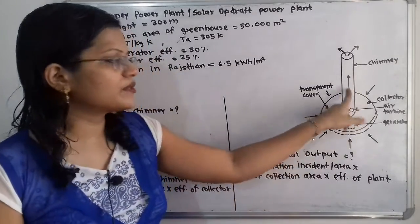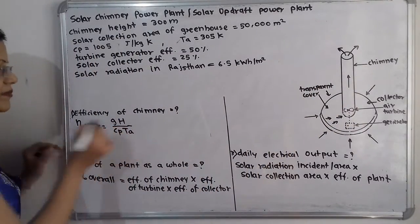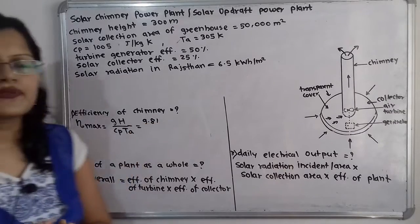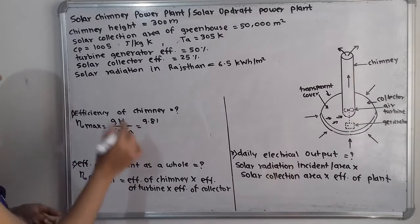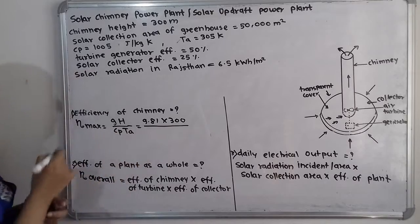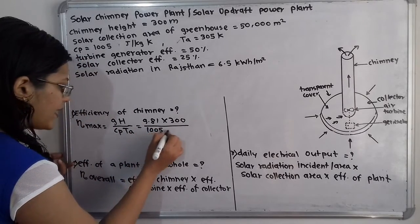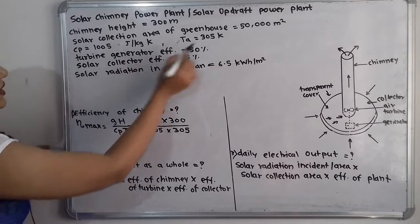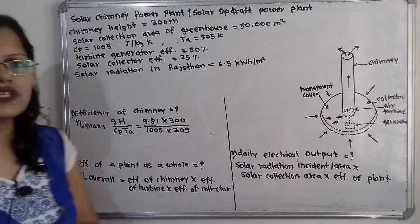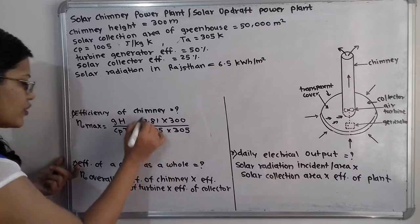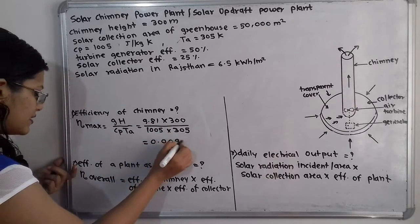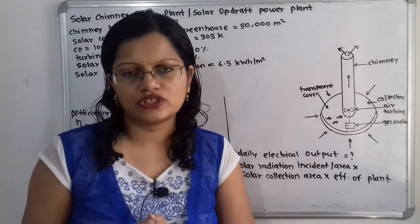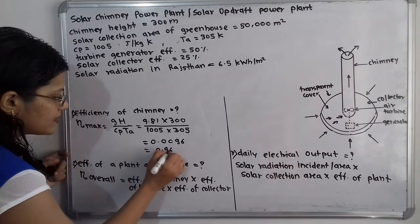For chimney efficiency, the formula is η_chimney = g·H / (cp·Ta). Here g = 9.81 m/s², H = 300 m, cp = 1005 J/kg·K, and Ta = 305 K. Since cp is in J/kg·K and temperature is in Kelvin, no unit conversion is needed. Calculating this gives η_max = 0.0096, which equals 0.96%.